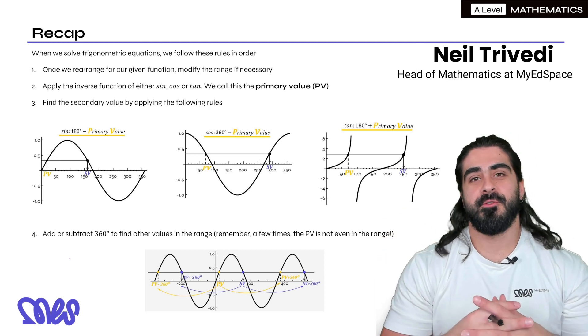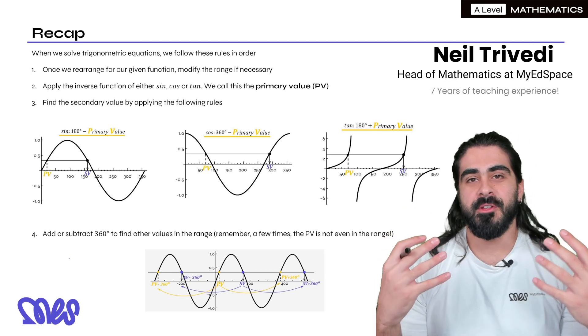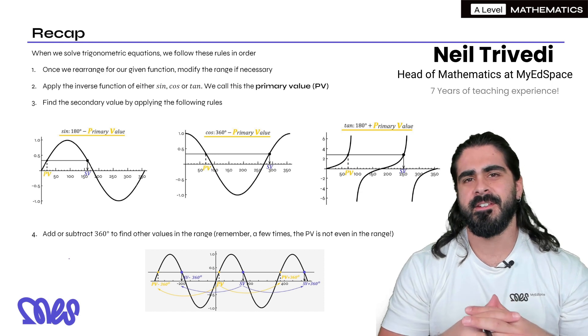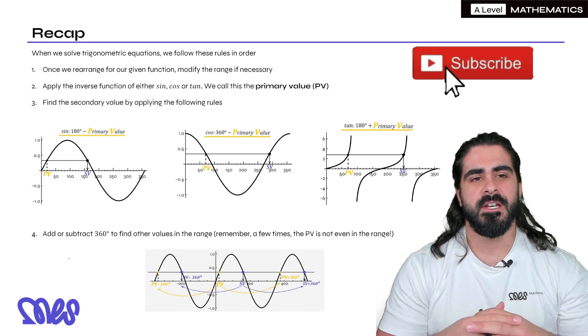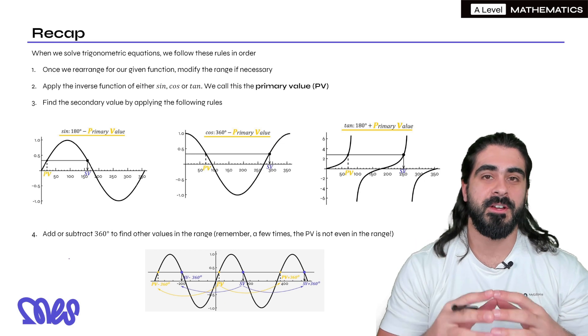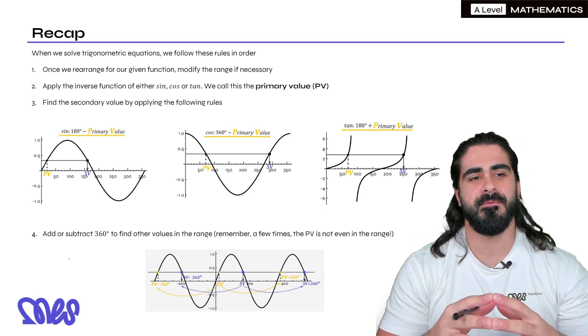Hey YouTube, welcome to the final episode on trigonometry. Today we're going to look at how we use the Pythagorean identity of sine squared plus cos squared equals 1 to solve certain problems.